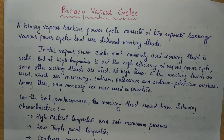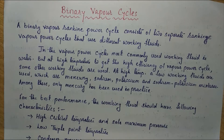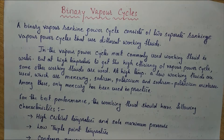While talking of Vapor Power Cycle, we use the term Rankine Cycle because the ideal cycle for Vapor Power Cycle is Rankine Cycle. Our today's topic is binary Vapor Power Cycle, which involves two Rankine Cycles simultaneously that use different working fluids. Now let us see how this binary Vapor Power Cycle works.